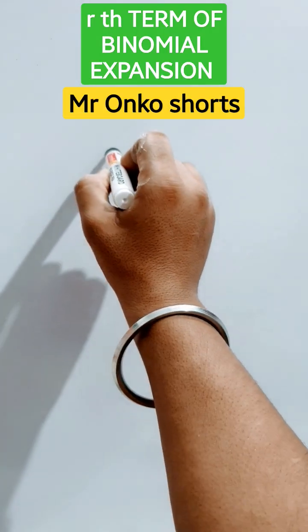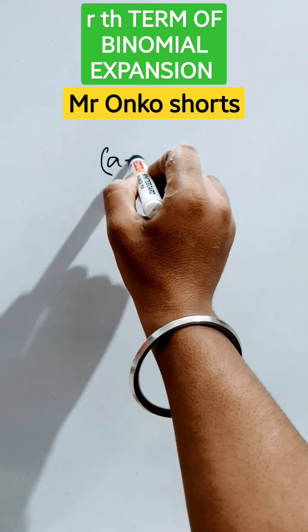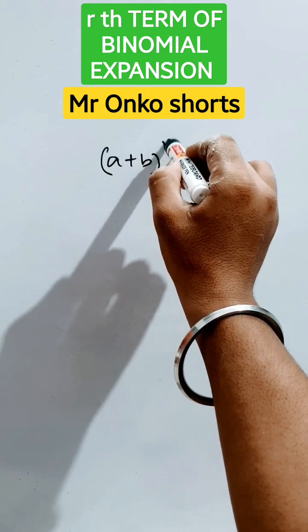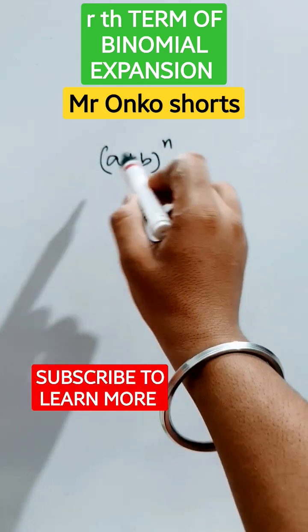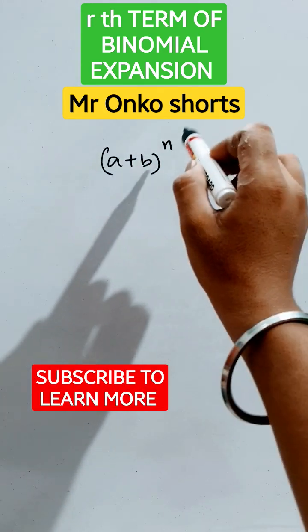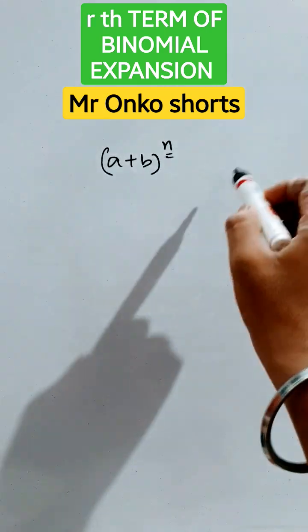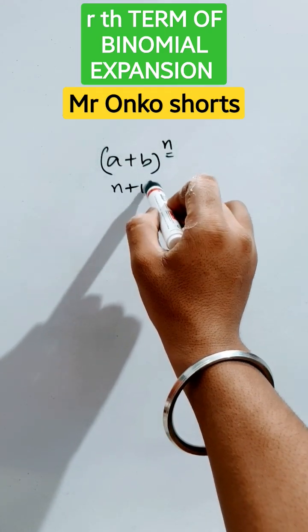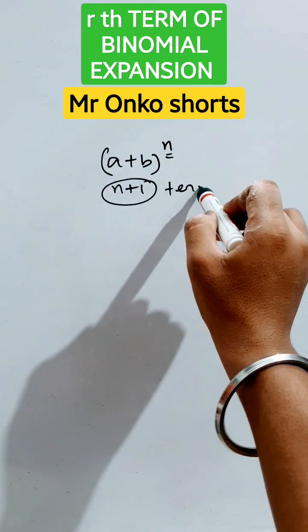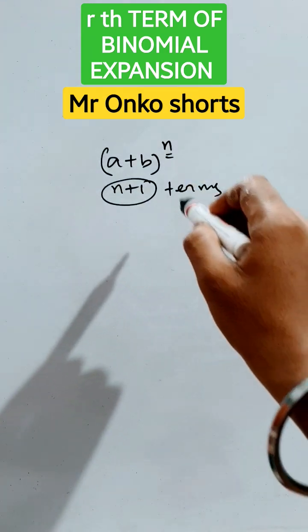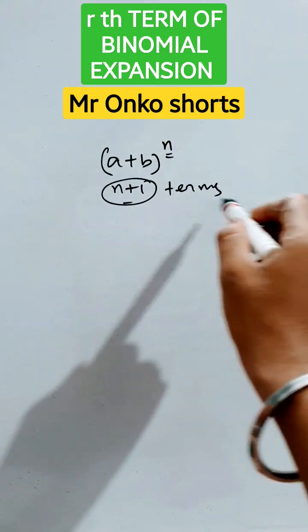Hello guys, welcome to Mr. Onko Shorts. Today we will learn some tricks based on binomial expansion. This is (a+b) to the power n, where n is the highest power. Remember that n+1 will be the number of terms of the expansion. When we expand it, we will get n+1 terms.